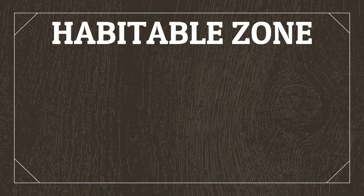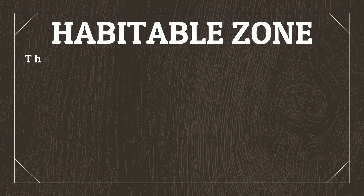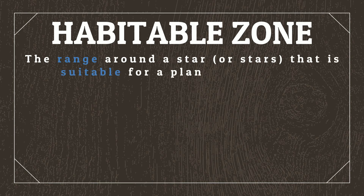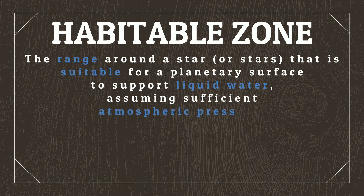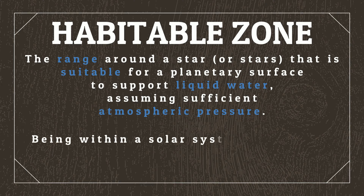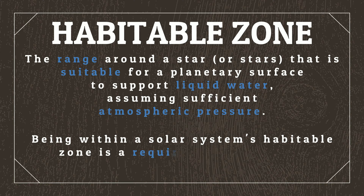Let's start by placing Locusts into orbit within the habitable zone of the solar system. The circumstellar habitable zone, or more commonly just the habitable zone, is the range around a star, or stars, that is suitable for a planetary surface to support liquid water, assuming sufficient atmospheric pressure. Due to the importance of liquid water for life, it is generally translated that being within a solar system's habitable zone is a requirement for life to emerge and survive.